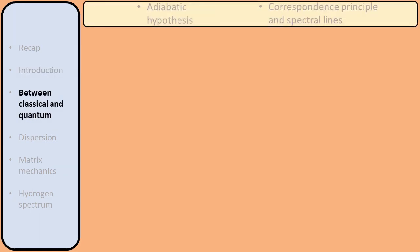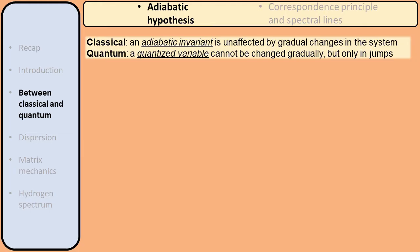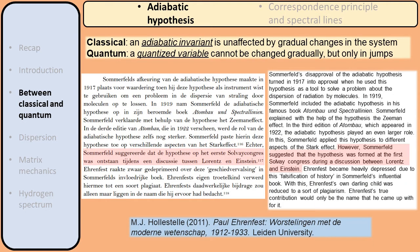Now let's look at each step of this development in more detail. First, let's understand the connection between classical mechanics and quantum mechanics. Understanding this connection is crucial when guessing new quantum mechanical laws, since the well-established theory of classical mechanics should be the starting point for developing new theories of physics. The first question is, how do we know which classical quantities should be quantized and which should not? In the old quantum theory, the adiabatic hypothesis served as a guideline. It basically says that if in classical mechanics a quantity cannot change gradually, then in quantum mechanics that quantity also cannot change gradually, but rather only in discrete jumps. This hypothesis was mainly developed by Paul Ehrenfest, but was initially met with resistance from Arnold Sommerfeld.